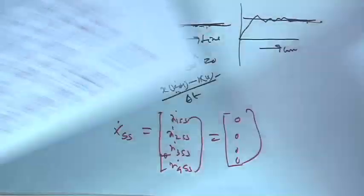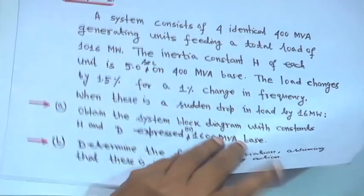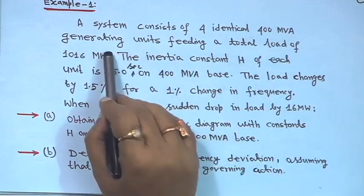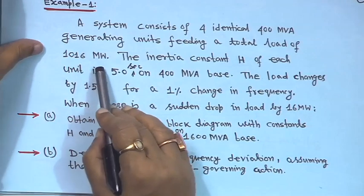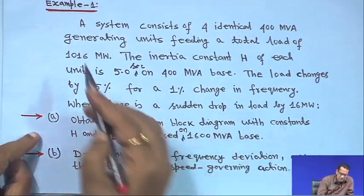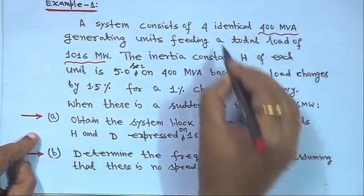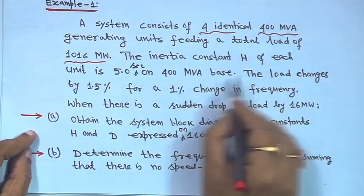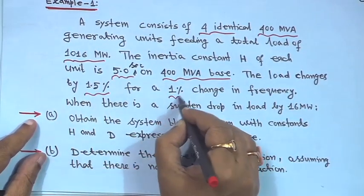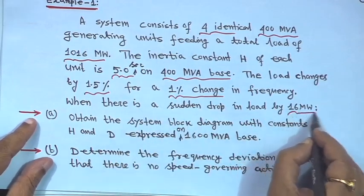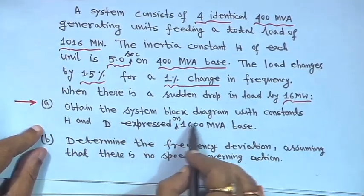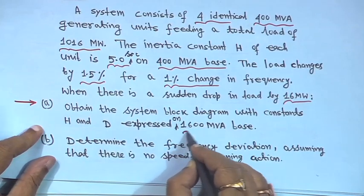Next we take a small example. A system consists of four identical 400 MVA generating units feeding a total load of 1016 MW. The inertia constant H of each unit is 5.0 seconds on a 400 MVA base. The load changes by 1.5% for a 1% change in frequency, and there is a sudden drop in load of 16 MW. Find the system block diagram with constants H and D expressed on a 1600 MVA base.